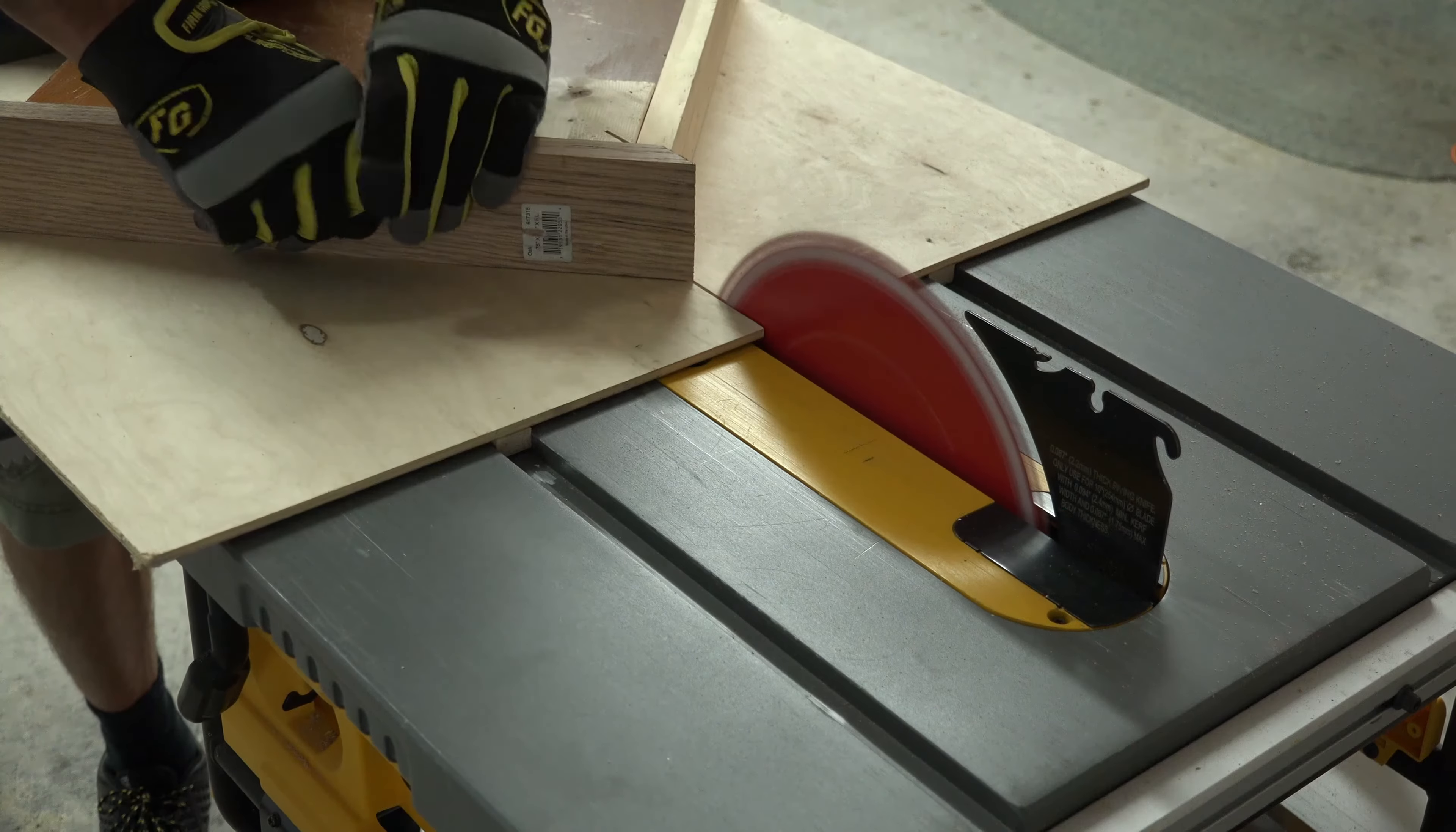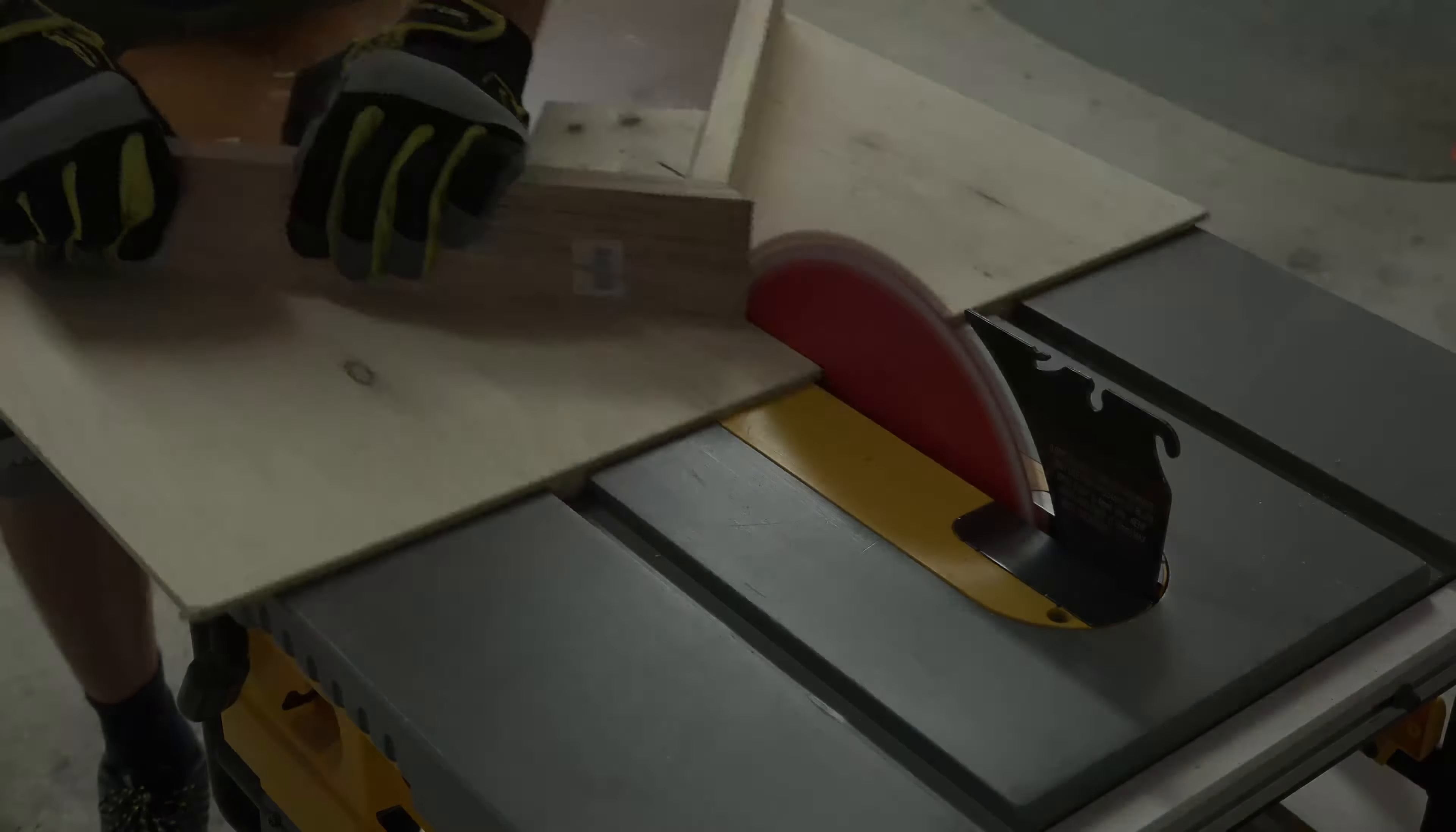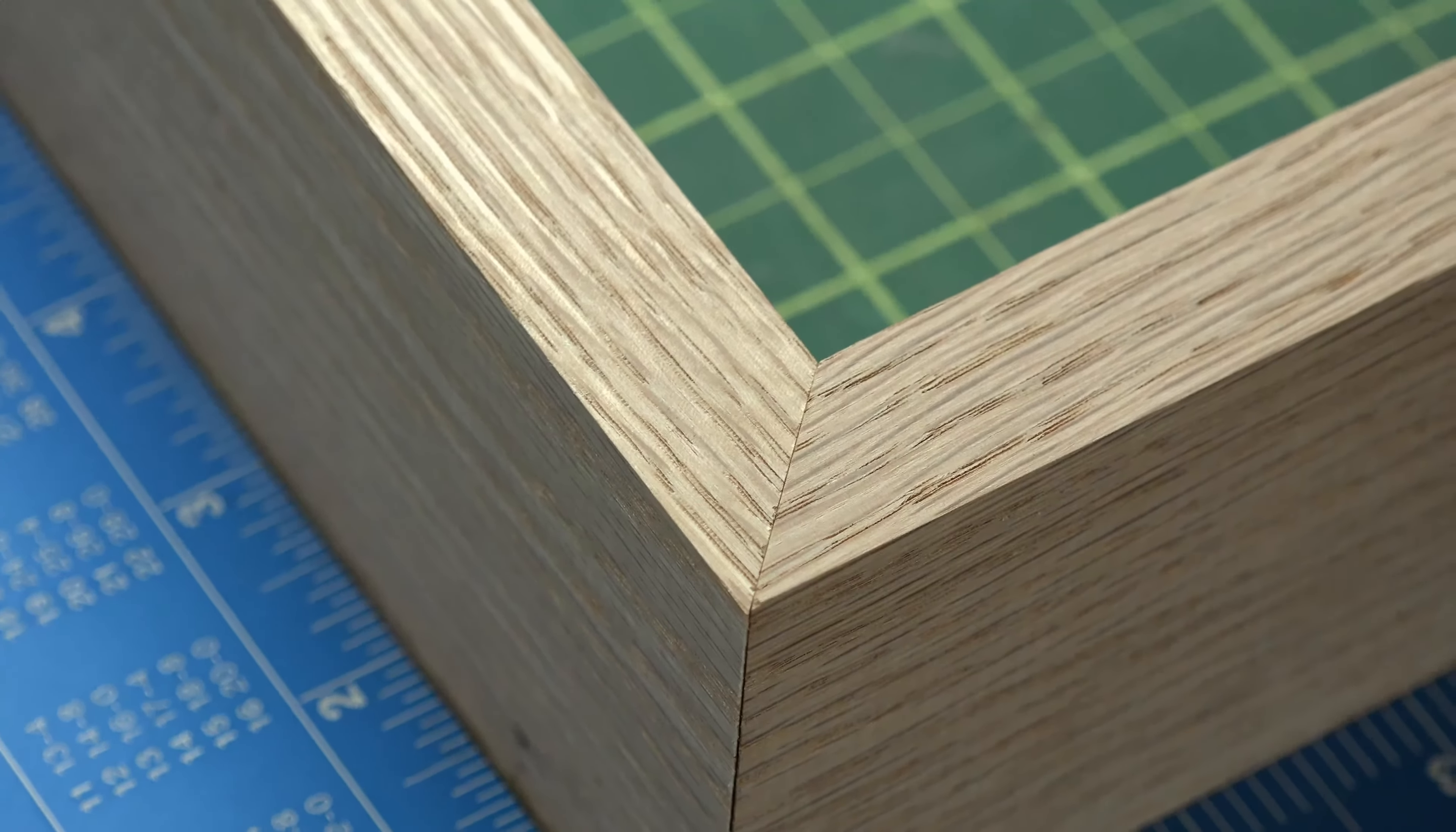So grabbing my framing jig, I will correct this error. I shave off just enough to ensure the burn marks are removed. Whatever you do to the top, repeat to the bottom piece. Before you move on, make sure your joint is square and your glass does not extend beyond your end cut.